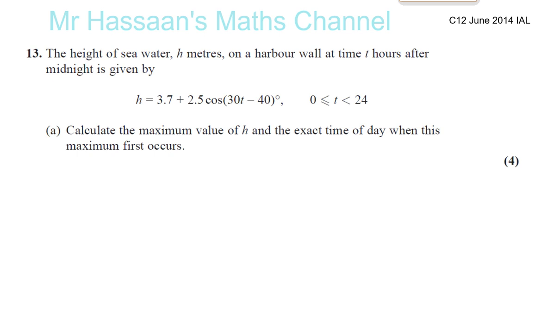Now we have C12 from June 2014 IAL, Question number 13. The height of seawater h meters on the harbour wall at time t hours after midnight. So t is in hours after midnight. Is given by the equation: h equals 3.7 plus 2.5 times cosine of 30t minus 40 degrees.